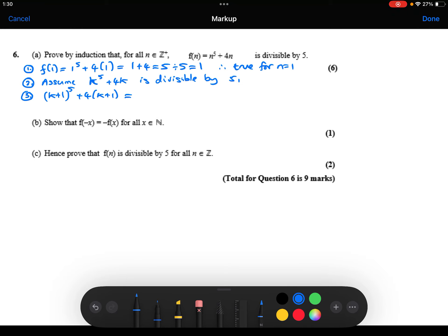So expanding these brackets, expanding the k plus 1 to the power 5 will be k to the power 5 plus 5k to the power 4 plus 10k cubed plus 10k squared plus 5k plus 1. So this is the same thing as this. I've just expanded that out using the binomial theorem. Plus, we've got the 4k plus 4 from the second bracket.